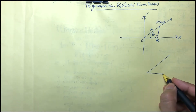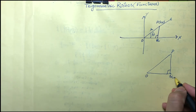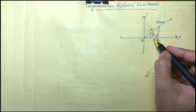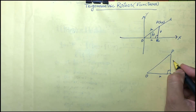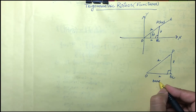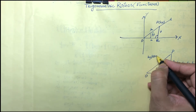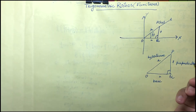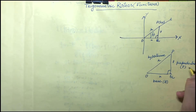We get a right angle triangle OPQ. Since point P is (x, y), this side is x and this side is y. In trigonometry we name these sides as base, perpendicular, and hypotenuse — denoted B, P, and H respectively.